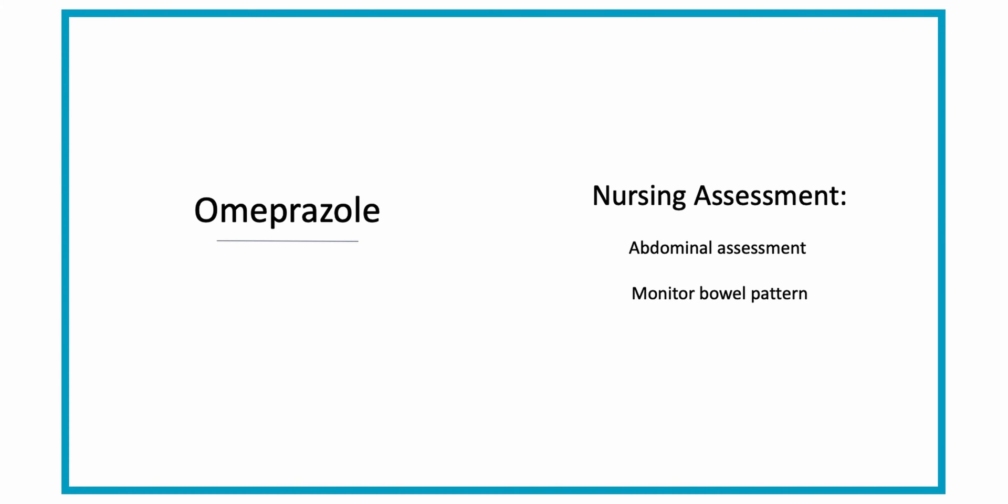For your nursing assessment, if your patient is on Omeprazole, you're going to want to do a thorough abdominal assessment — monitoring their bowel sounds and monitoring for any abdominal distension or tenderness. Monitor for changes in their stool, such as if they turn black and tarry, which could indicate a GI bleed related to an ulcer or colitis. Diarrhea could also be a sign of C. diff.